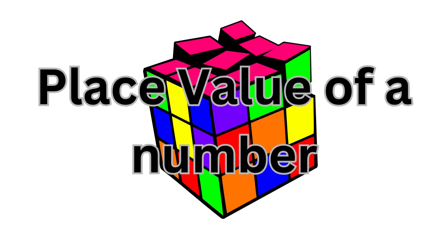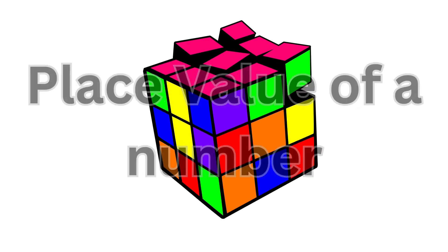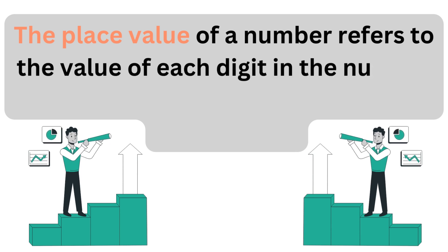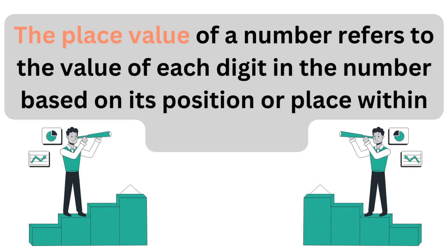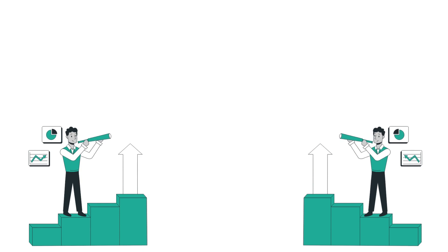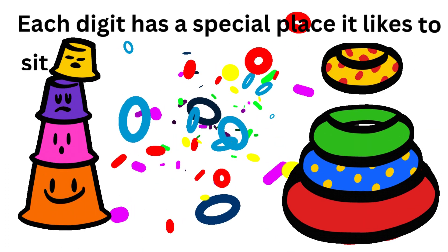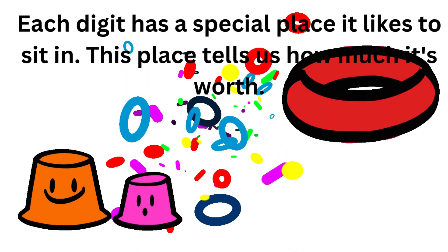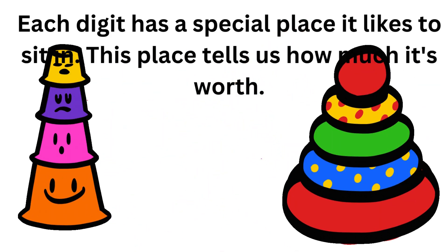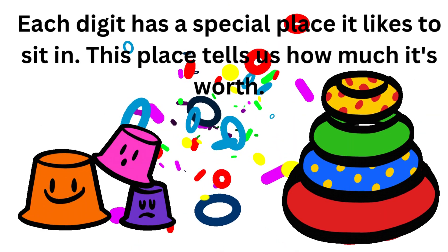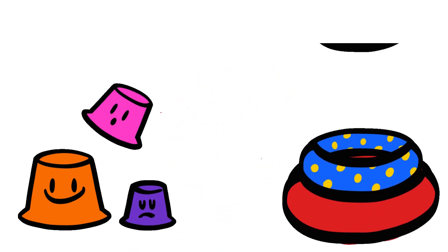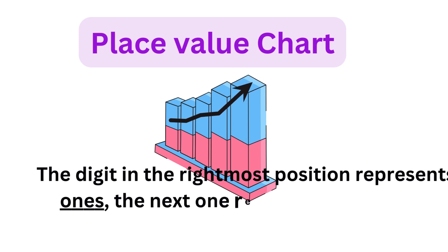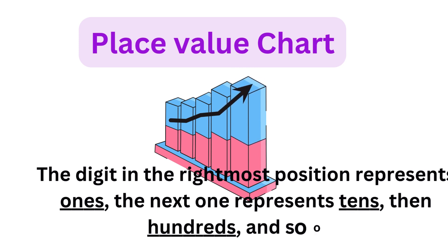Place value of a number. The place value of a number refers to the value of each digit in a number based on its position or place within the number. Places matter. Imagine your toy blocks have their own special spots to sit in. When you make a number, each digit sits in a specific place, and that place tells you how much it's worth. Place value chart. Let's look into the place value chart to know how much a digit is worth based on where it sits.